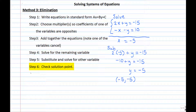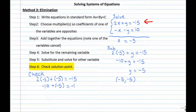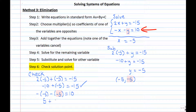We can check this by plugging into both equations. In the first equation, 2 times negative 5 plus negative 5 equals negative 10 plus negative 5, which equals negative 15 — that checks out. In the second equation, the opposite of x minus y should equal 10: plugging in negative 5 for x and negative 5 for y gives positive 5 plus 5, which clearly equals 10. So this point satisfies both equations and is the solution to the system using elimination.